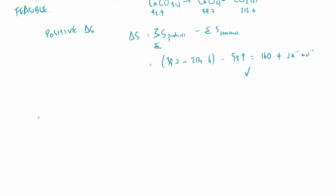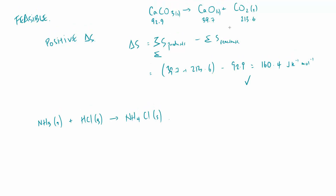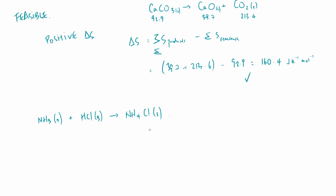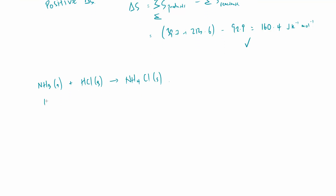Let's look at the reaction of ammonia with hydrogen chloride gas. Both reactants are gases so have high entropy; the product, ammonium chloride, is a solid with much less entropy. Also, two molecules are becoming one — two gases becoming a solid. So we would expect a negative entropy change for this reaction. Sticking the numbers in: ammonia 192.3, hydrogen chloride 186.8, and ammonium chloride 94.6 J/K/mol.